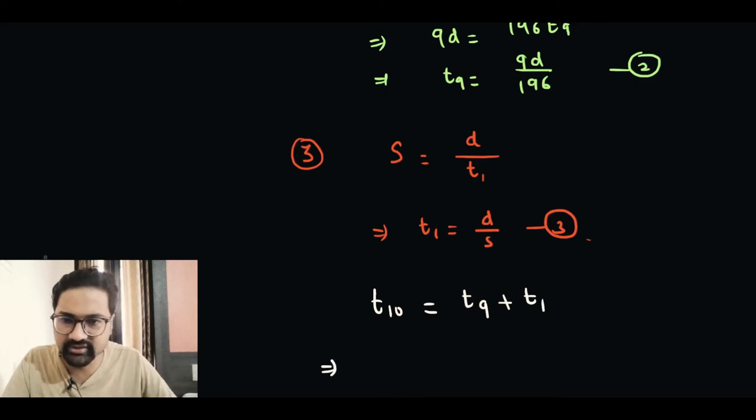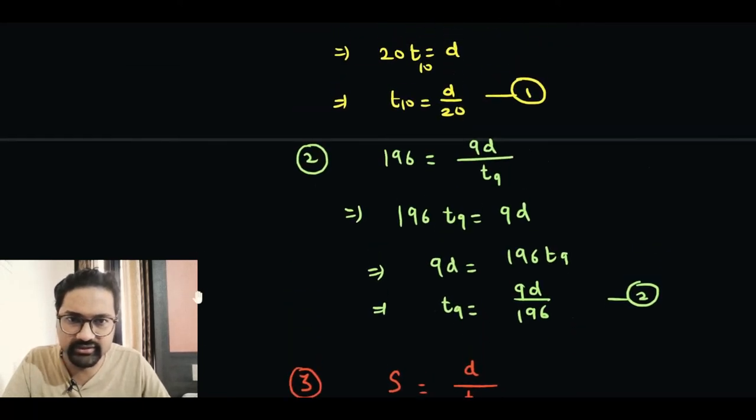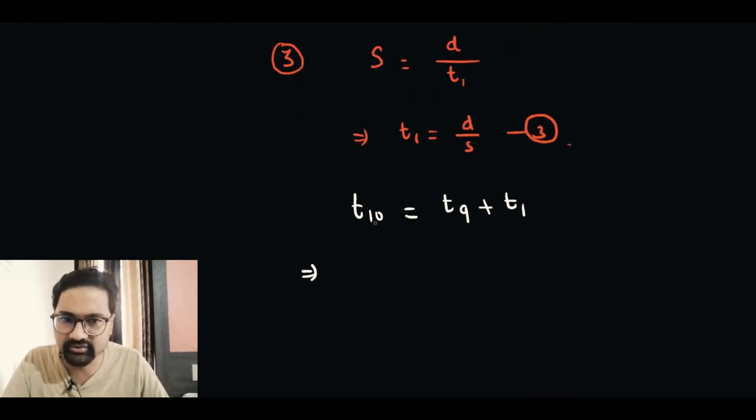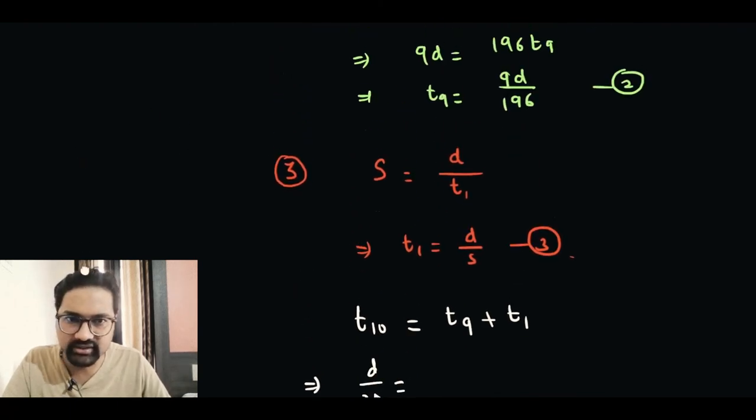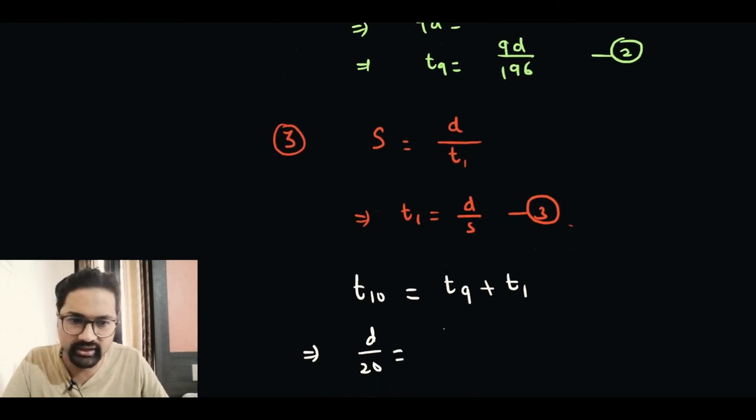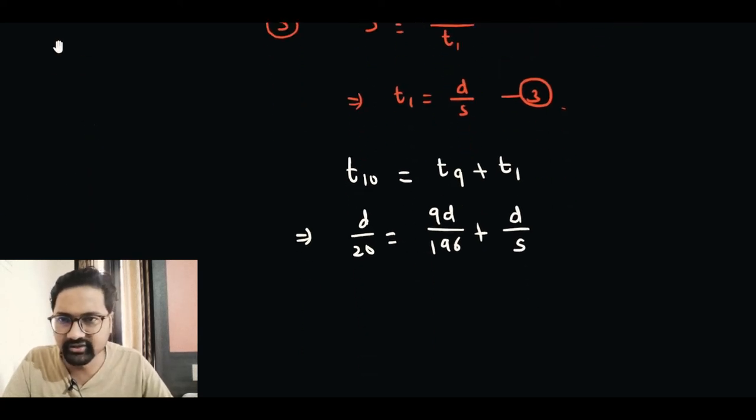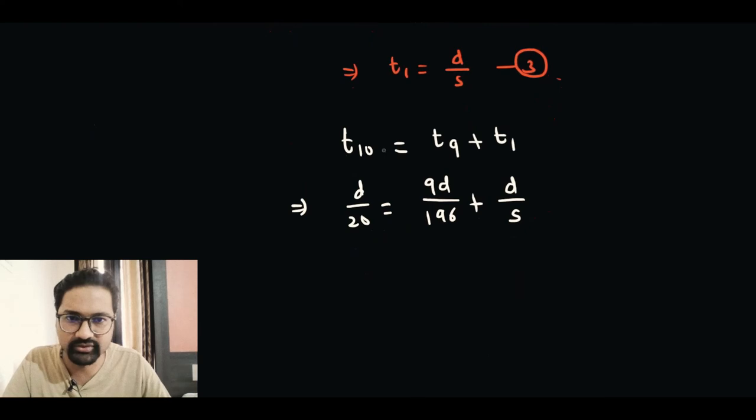What is T10? T10 is D over 20. What is T9? T9 is 9D over 196. And T1 is D over S, and S is what we have to find. So I think we have the answer now. All we have to do is get rid of this D.